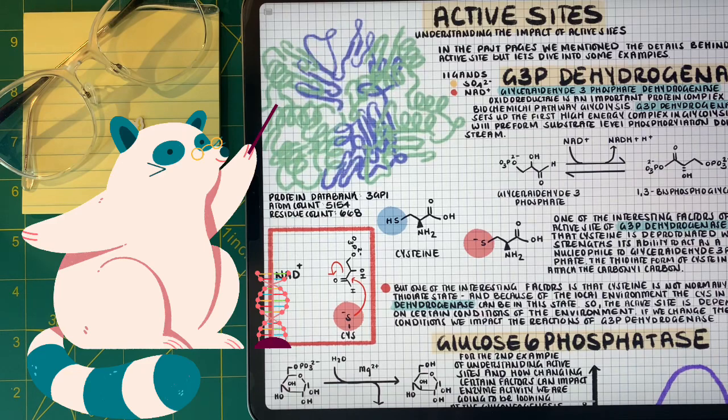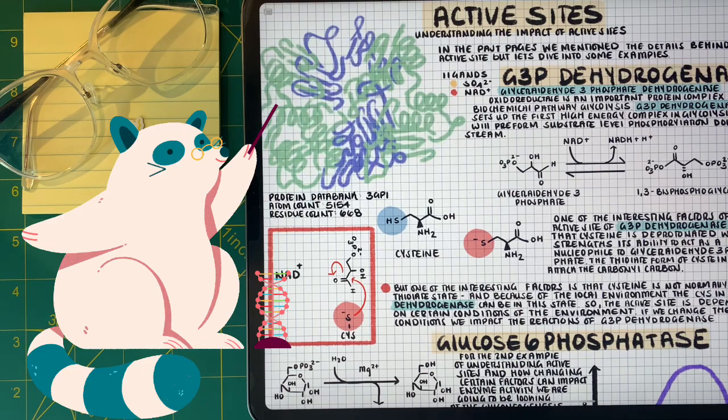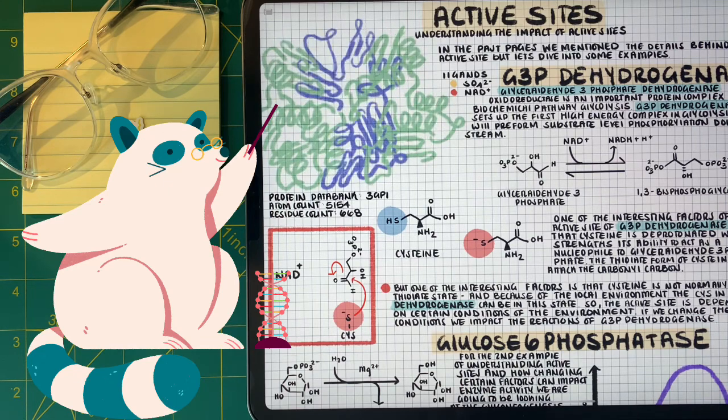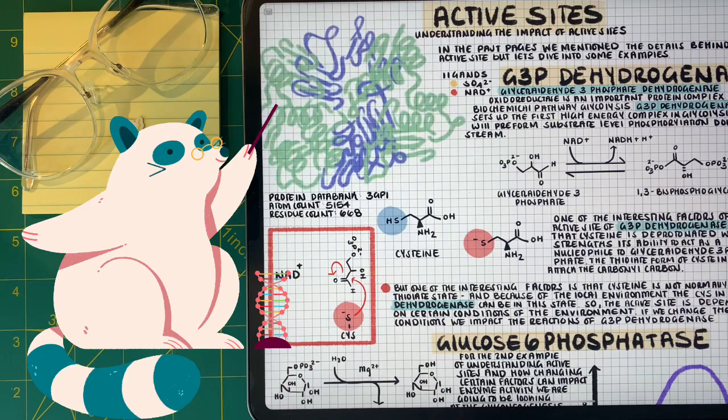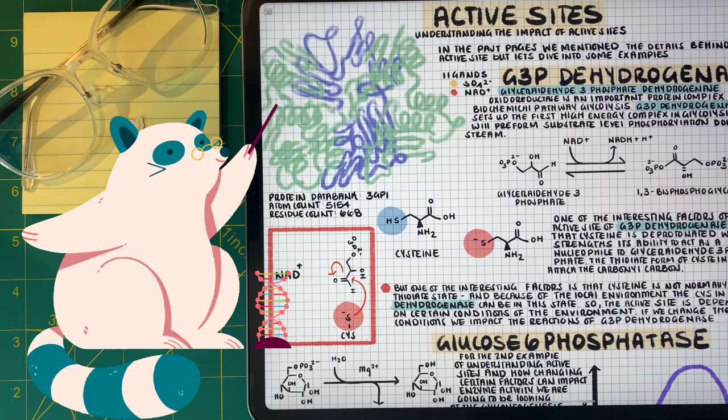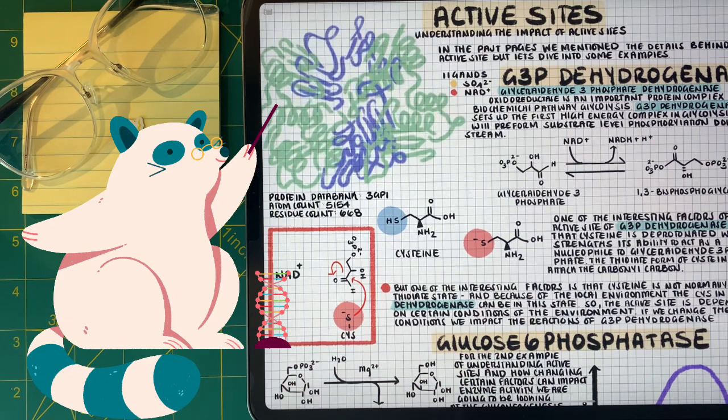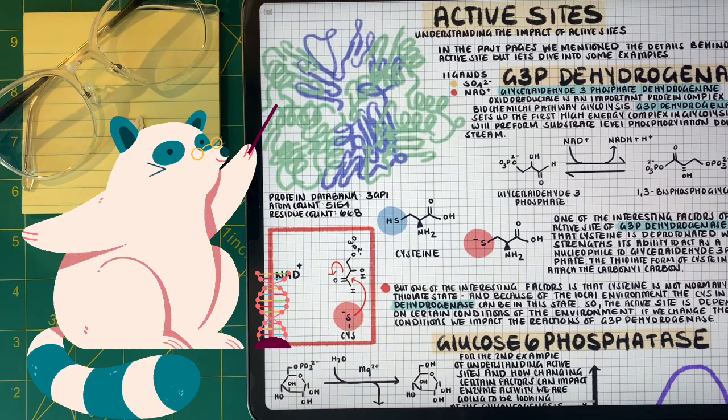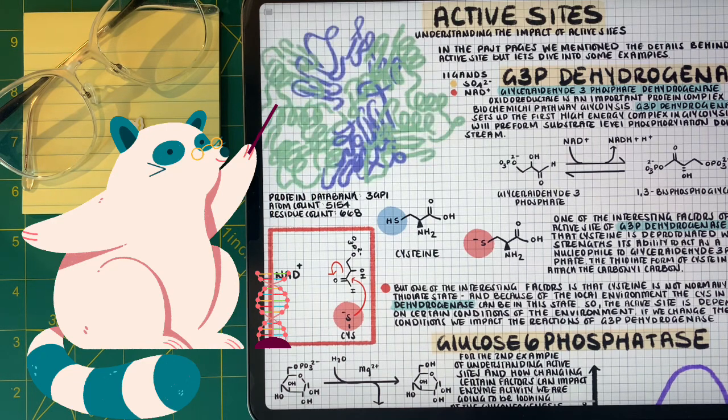Now active sites and binding sites are very specific for the ligand they interact with. For example, here we can see with glyceraldehyde 3-phosphate dehydrogenase, we actually have a deprotonated cysteine residue at the active site. Now cysteine isn't normally deprotonated, but this is a product of glyceraldehyde 3-phosphate's environment which influences its reaction with G3P.